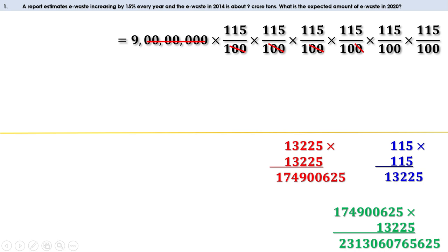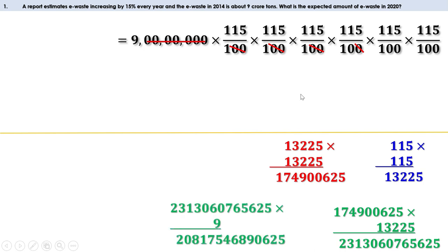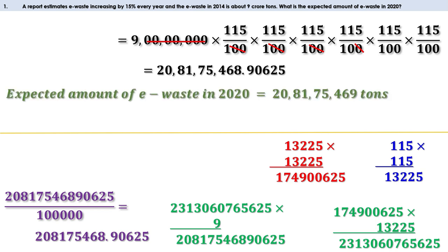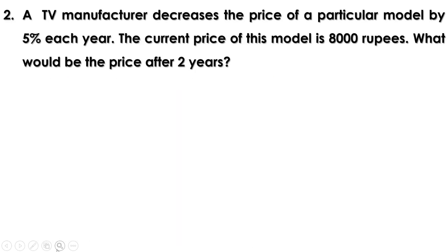We multiply 17,49,00,625 by 13,225 again to get 2,31,30,56,25,625, then multiply by 9 to get the numerator. Dividing by 1 lakh (10 × 100 × 100), we get approximately 20 crores 81,75,468.90. Rounding, we get 20 crores 81,75,469 tons. The expected amount of e-waste in 2020 is 20,81,75,469 tons.